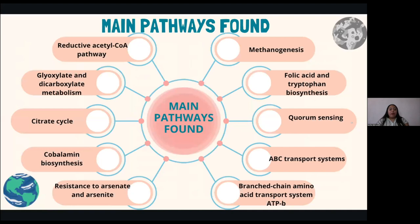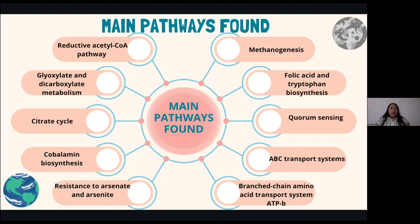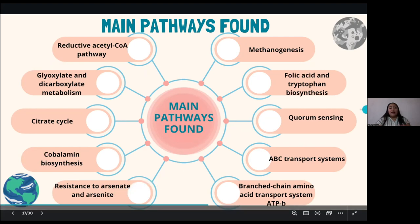I also found some of the main pathways present in the samples. For example, we have the reductive acetyl-CoA pathway, methanogenesis, glyoxylate metabolism, the citrate cycle, and other pathways more related with the capacity of the bacteria to interact with their environment, like quorum sensing, or pathways related to the bacteria's ability to survive in these harsh environments, like pathways related to resistance to arsenate and arsenite.